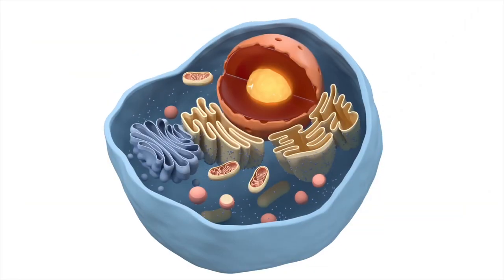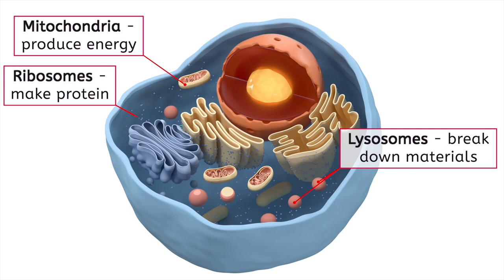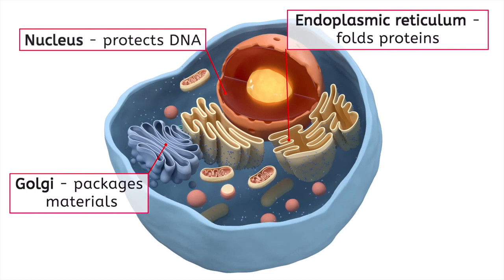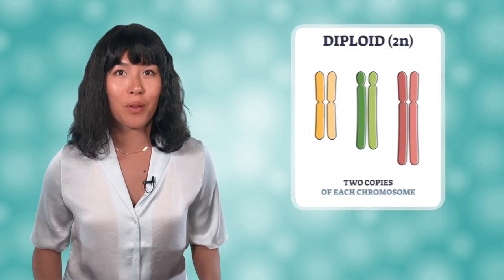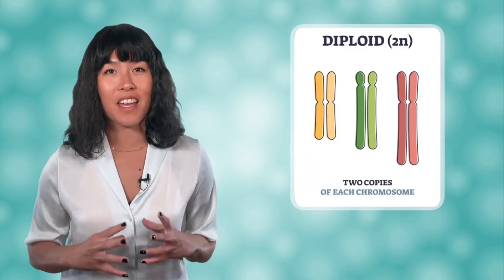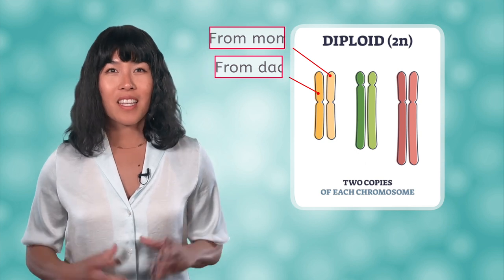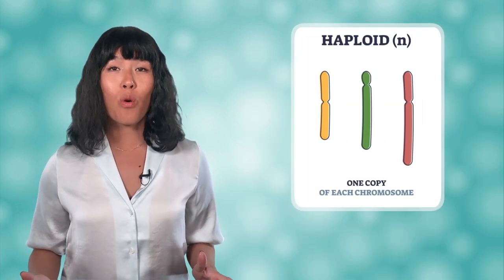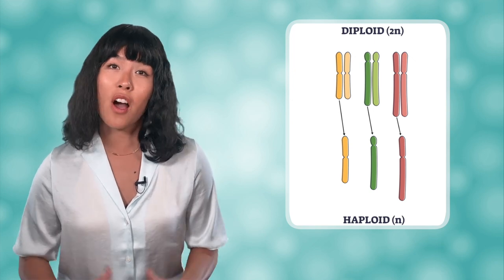Remember all those organelles we learned about several units ago? We can find most of them in an animal cell — ribosomes to make protein, mitochondria to produce energy from the food we eat, lysosomes to break down materials. One that you hopefully haven't forgotten is the nucleus, which stores DNA. Almost all animal cells are diploid, meaning they contain two of each chromosome inside the nucleus — one from the female parent and one from the male parent. The only exception are the gametes, which are used for reproduction and are haploid, meaning they only contain one copy of each chromosome.